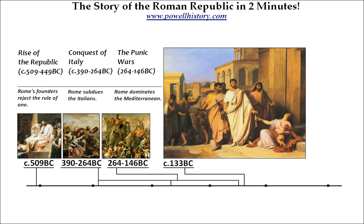Not wanting to be ruled, the lower classes turned to two sibling demagogues, the Gracchi, circa 133 BC, to try to subject Rome's republican system to democratic control. The result was the reignition of class conflict which Rome had tried to reduce.